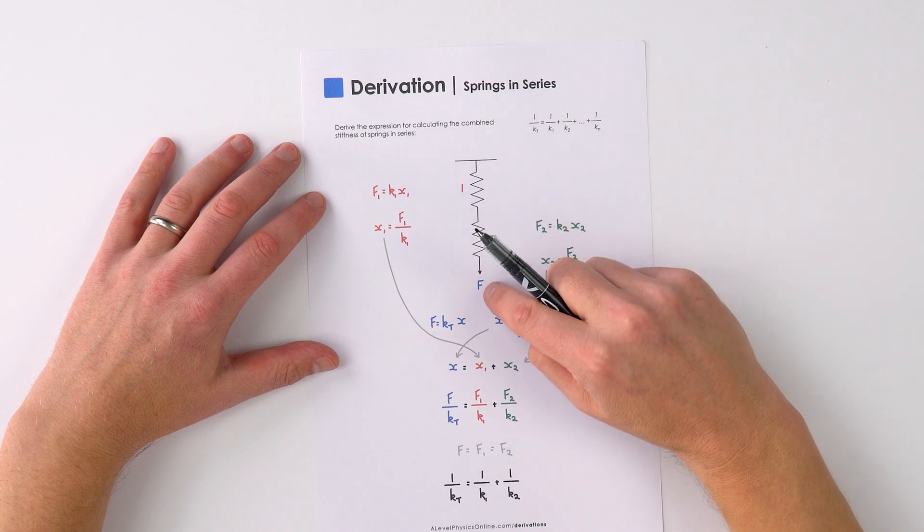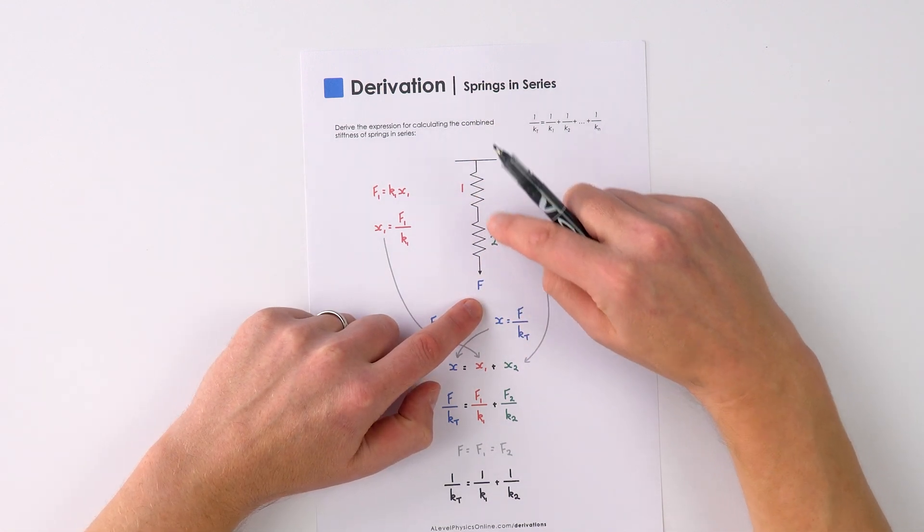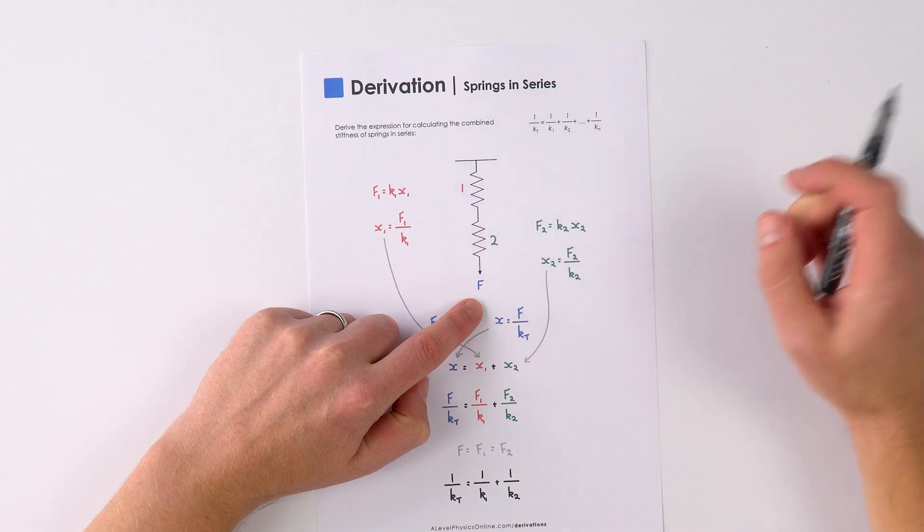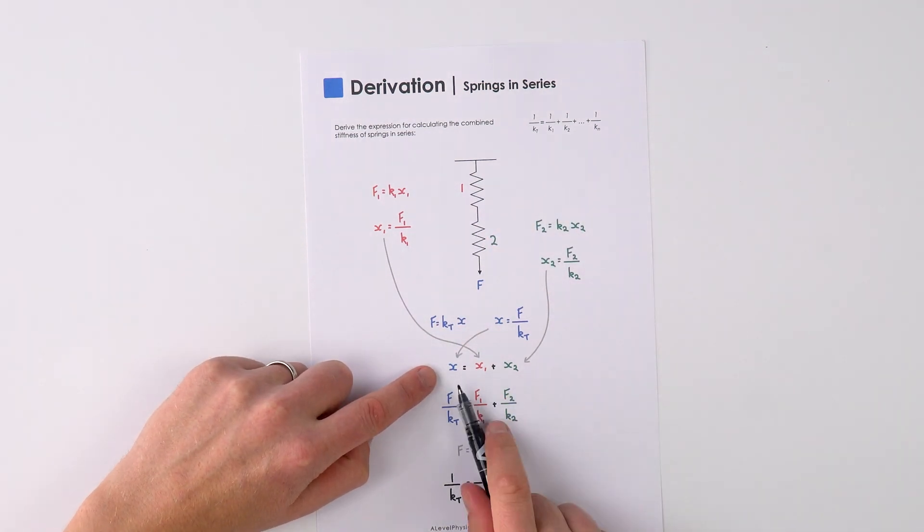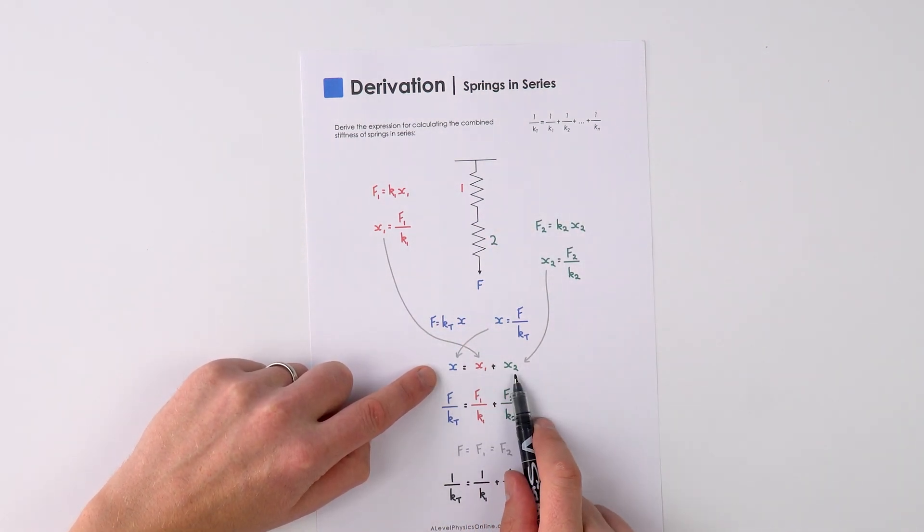Now this extension x is going to be equal to the extension of this spring added to the extension of this spring. So therefore we can say that x is equal to x1 plus x2.